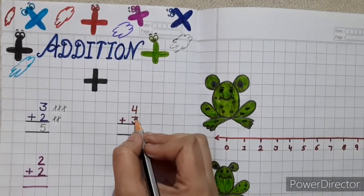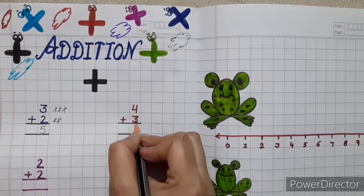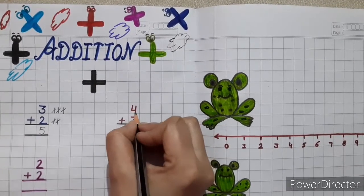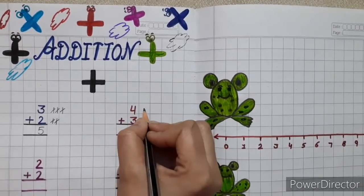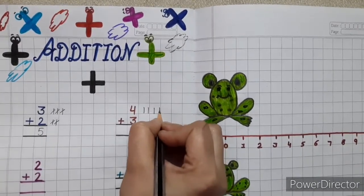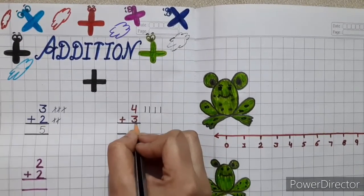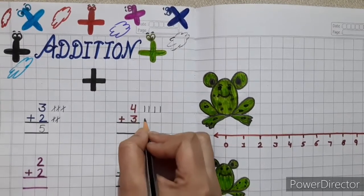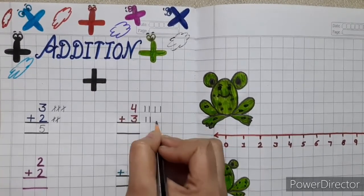Next is 4 plus 3. So here is 4. So draw 4 lines here. 1, 2, 3, 4. Next is 3. So draw 3 lines. 1, 2, 3.